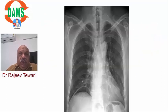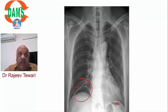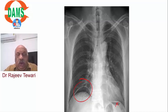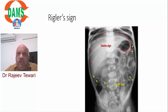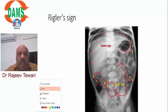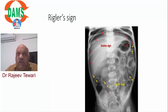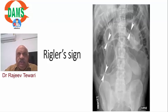Differentiating air below the diaphragm from fundal gas shadow or splenic flexure air can be confusing. Rigler's sign shows the bowel wall - the yellow arrows indicate the bowel wall is visible because there is air inside and air outside the bowel, with the wall visible in between. All the white lines are bowel wall - this is the sign of pneumoperitoneum.